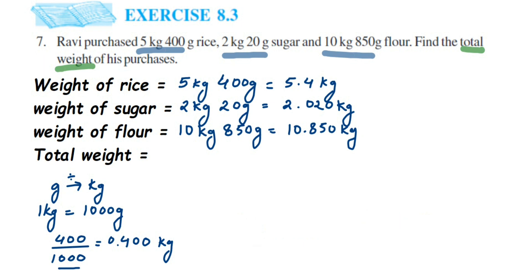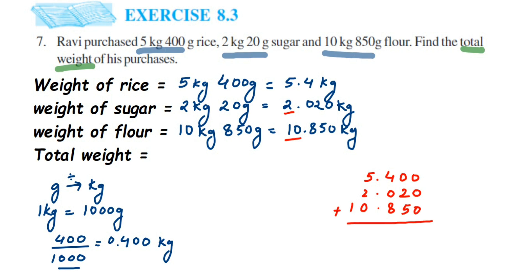Now we add all three values. We use the lining-up method where we line up the decimals. The first number is 5.4, the second is 2.020 — on the left is 2, on the right is 020 — and the third is 10.850 — on the left is 10, on the right is 850. You can leave blank spaces or place zeros to avoid confusion.